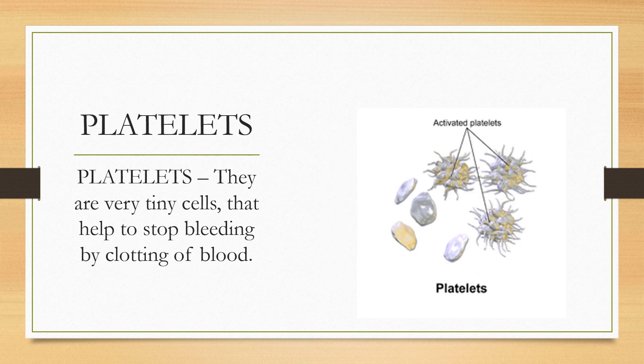Platelets are very tiny cells that help to stop bleeding by clotting of blood. They are a component of blood whose function is to react to bleeding and form blood clots by clumping, thereby initiating a blood clot. Platelets have no cell nucleus and are found only in mammals.